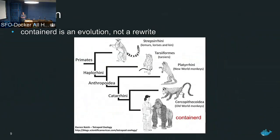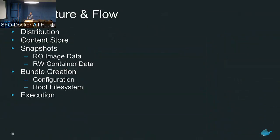The goal of this project is not to build new things but to take the concepts we've been leveraging over the past three years and consolidate them into a single community-driven project. For this talk we're going to cover a lot about architecture and the flow of the containerd approach to image distribution, containers, and execution. I'm going to start by talking about distribution and the content store.